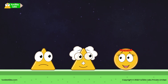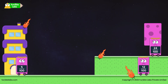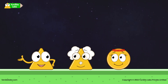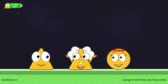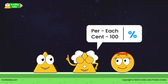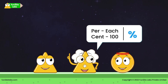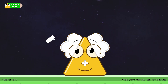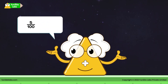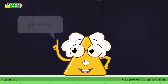Uncle Math explains: Look around. All these are fractions with hundred as the denominator. Such fractions with denominator hundred are called percentages. Per means 'for each' and cent means 'hundred,' so percentage literally means 'for every hundred.' That is why it always has hundred in the denominator, and we indicate it by using the percent symbol. For example, five by hundred is nothing but five percent. Similarly, twelve by hundred is twelve percent, and so on.